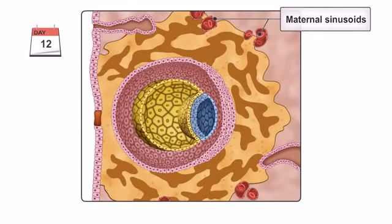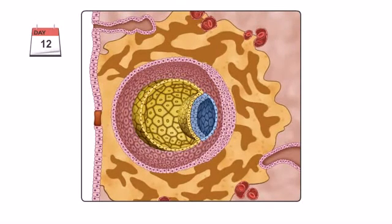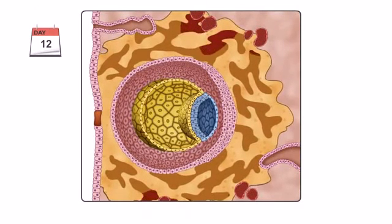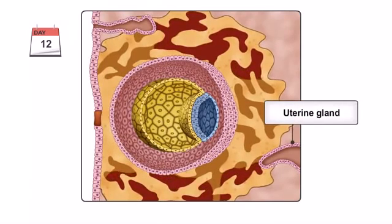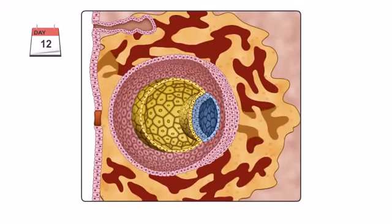As the syncytiotrophoblast continues to expand, enzymes begin to erode the lining of the sinusoids and uterine glands, allowing maternal blood and uterine secretions to flow into the lacunar networks.